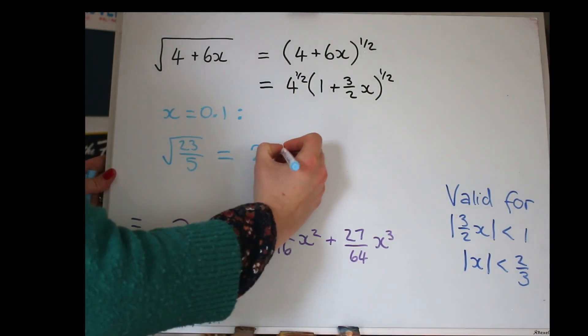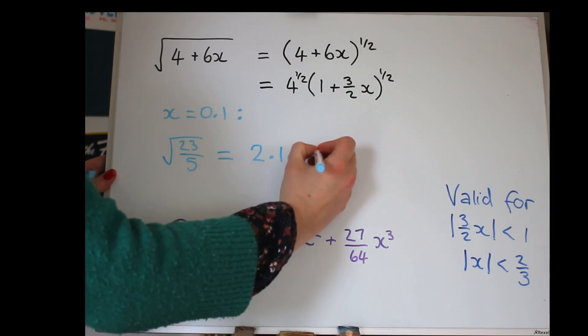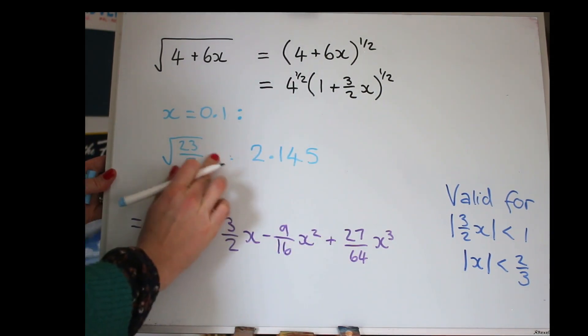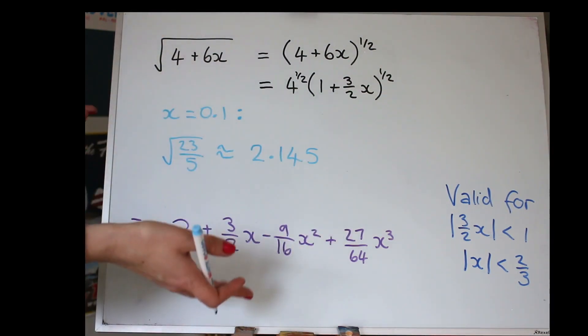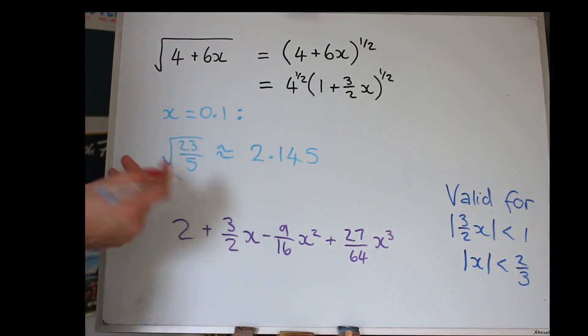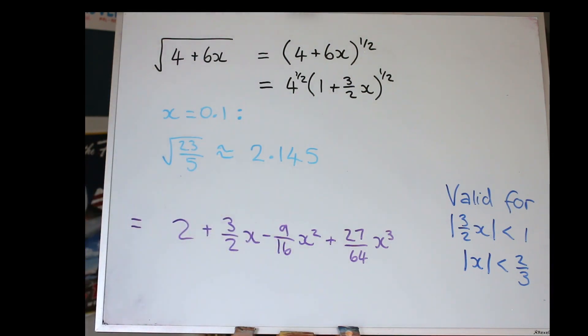And then we can use 0.1 in the expansion and get a value for that. So, just the first few decimal places, I get 2.145. I should probably use squiggly, an approximation sign here. You can use this as an approximation for roots. So, see how when you pick a number for X, you can use this to get an approximation for a root. Great, let's look at one more example.